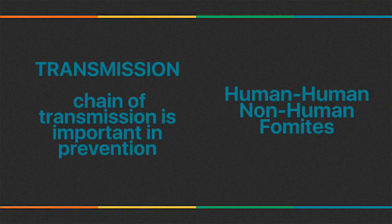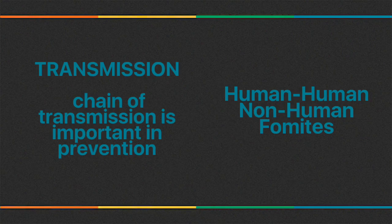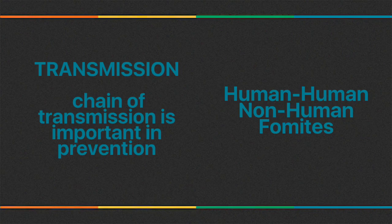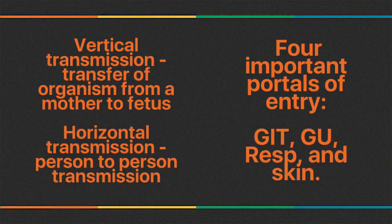Transmission is the passage of disease. Understanding the chain of transmission is important for disease prevention. Routes include: human-to-human transmission (e.g., respiratory droplets, blood transfusions), non-human transmission (e.g., tick bites, insect bites), and fomites — inanimate objects that serve as a source of bacteria and aid in transmission.